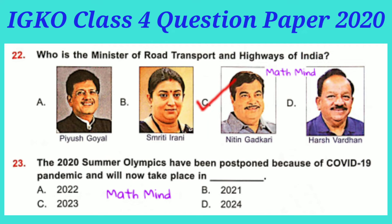Question No. 23: The 2020 Summer Olympics was postponed because of the COVID-19 pandemic and will take place in dash. Option B is correct: 2021. The opening ceremony was on 23 July 2021 and the closing ceremony was on 8 August 2021.